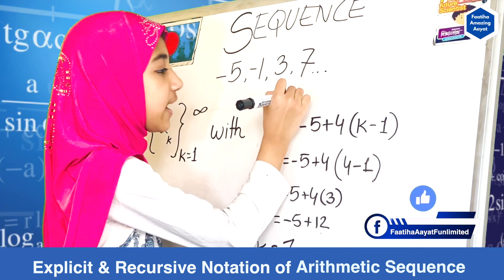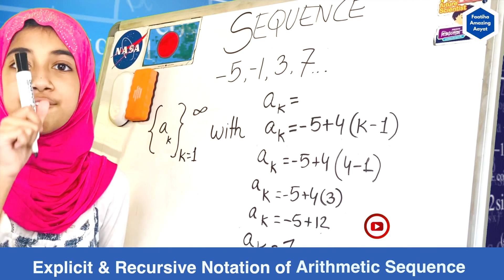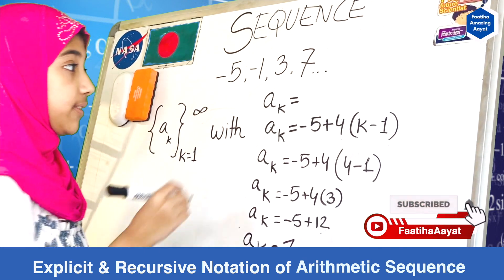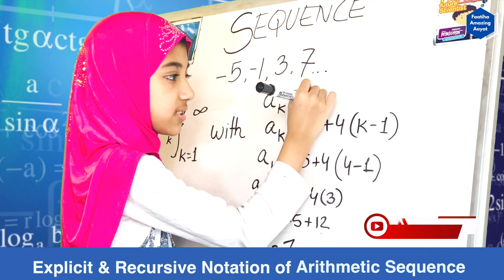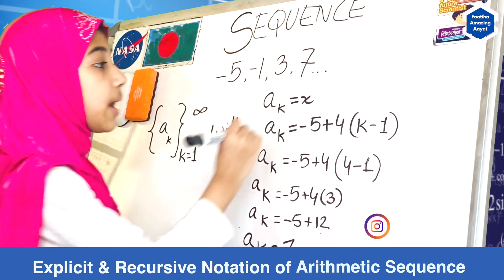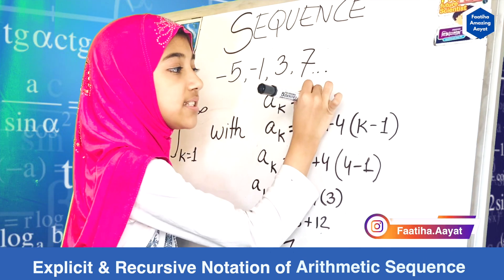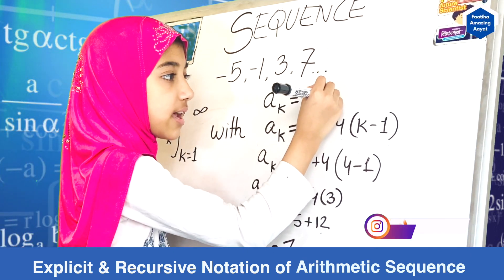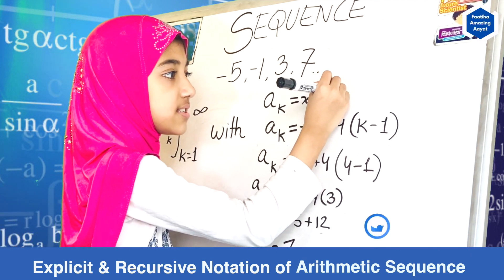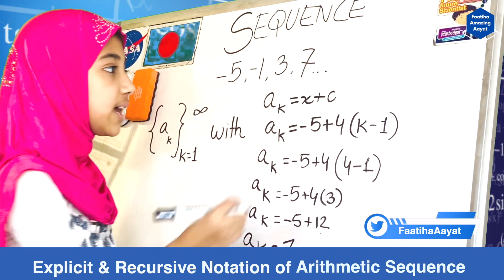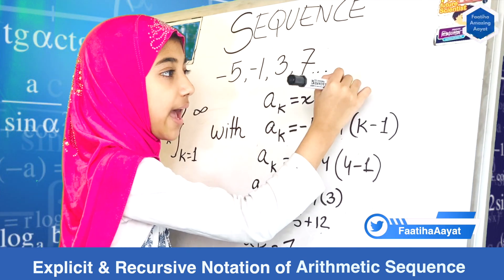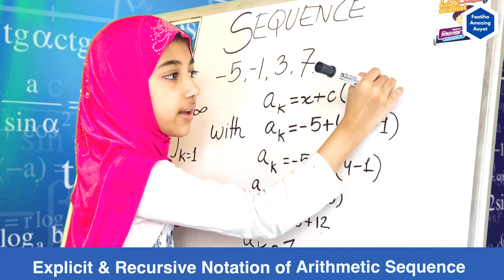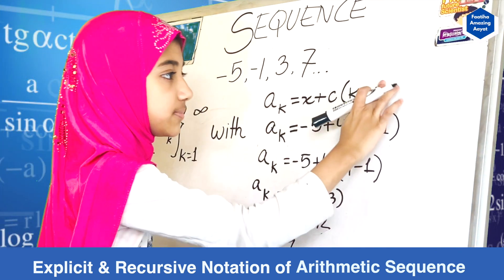So a sub k is equal to our first term in the sequence — that would be x, right? x is the first term — plus our common difference, let's call it c, right? Common difference. And then we're going to put k minus one: our term minus one.